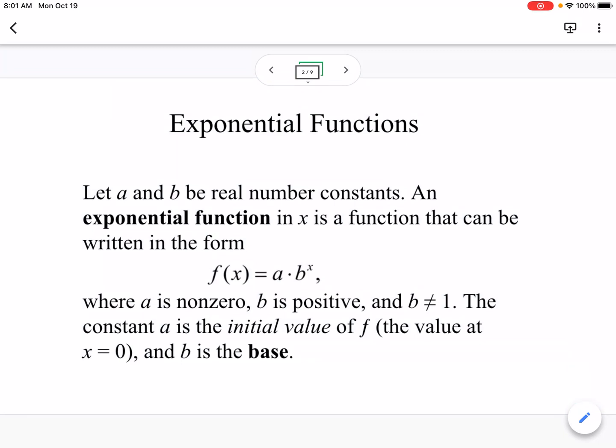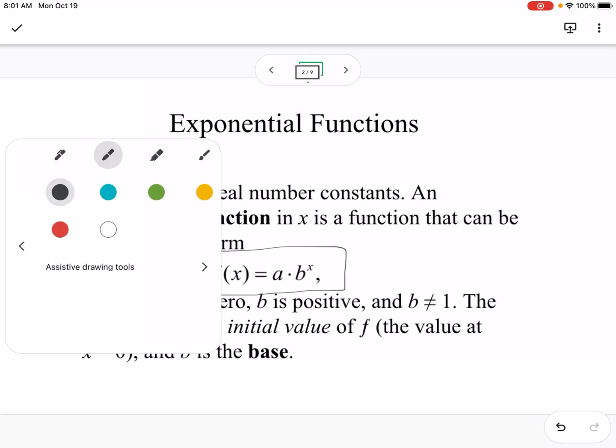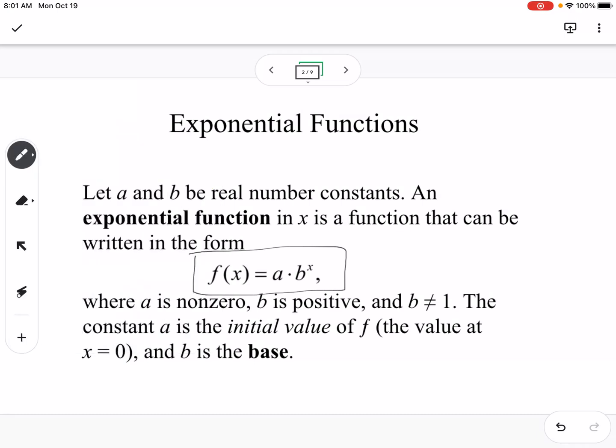Okay, so exponential functions. a and b are real number constants, and the exponential function would be in the form f of x equals a times b to the x. And it says where a is non-zero, b is positive, and b does not equal 1. The constant a is the initial value, so the a value is your starting value, and the b is the growth or decay rate. So if b is greater than 1, it's going to be growth. If b is between 0 and 1, it will be decay.